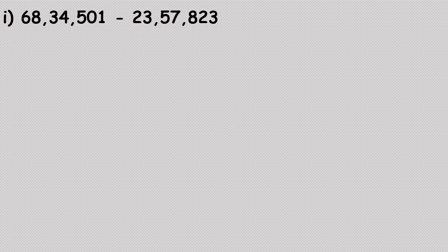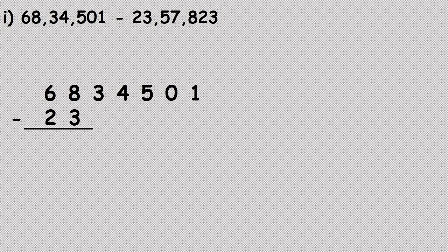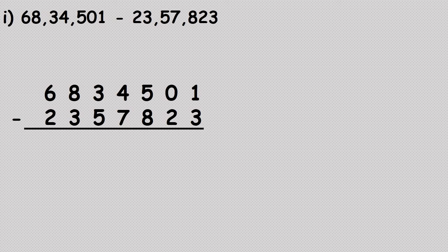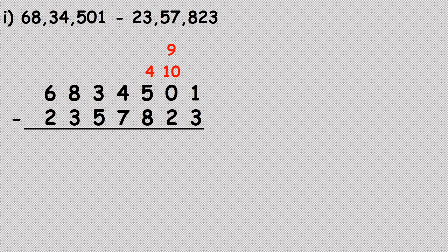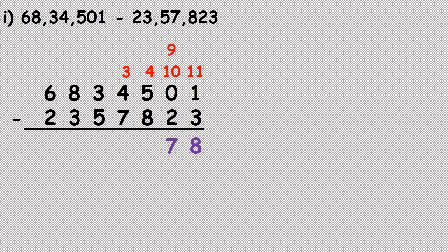Another example: twenty-three lakh fifty-seven thousand eight hundred and twenty-three subtracted from sixty-eight lakh thirty-four thousand five hundred and one. We arrange numbers as per place value, then subtract from the units place. Since we cannot subtract three from one, and the next digit is zero, we move further — five becomes four, zero becomes ten, ten becomes nine, and one becomes eleven. Eleven minus three is eight; nine minus two is seven.